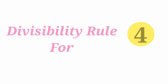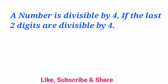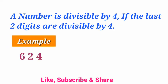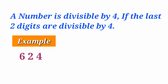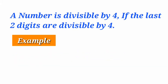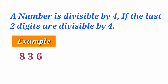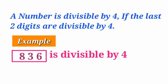Divisibility rule for 4. A number is divisible by 4 if the last 2 digits are divisible by 4. For example, 624. The last 2 digits are 24, and 24 is divisible by 4, so 624 is divisible by 4. Let us see another example: 836. The last 2 digits are 36, and 36 is divisible by 4, so 836 is divisible by 4.